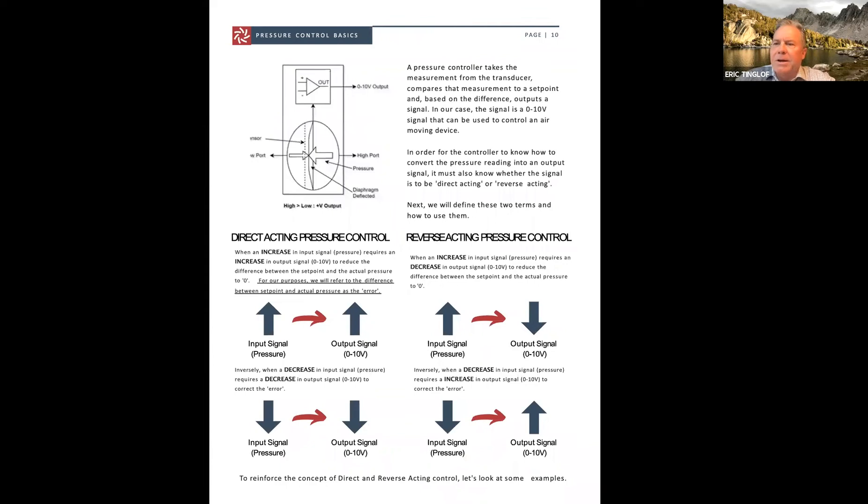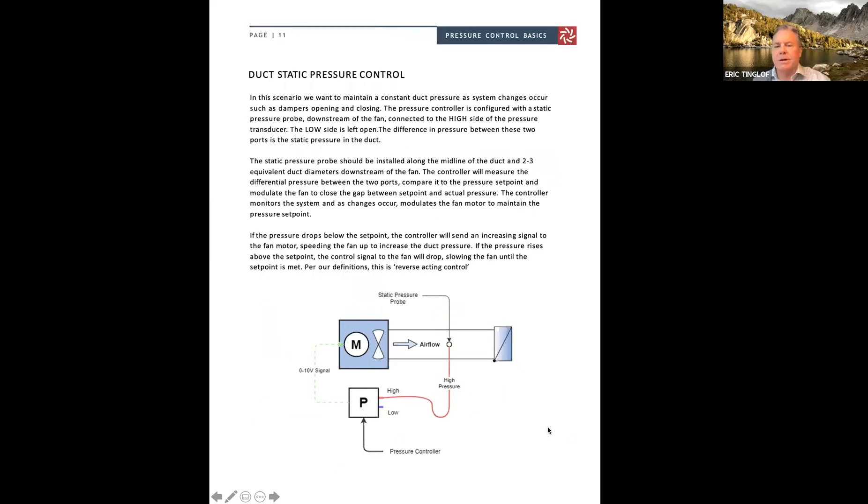And then we get into direct acting versus reverse acting. With direct acting, as the input signal, for instance pressure, is going up, the output signal that we're sending to a device or a motor also goes up in tandem with that. As the pressure goes down, our output signal also goes down. So that's direct acting pressure control. And then you have reverse acting pressure control where this is just the opposite. If pressure increases, your output signal decreases. And same way, input signal pressure going down, your output signal goes up.